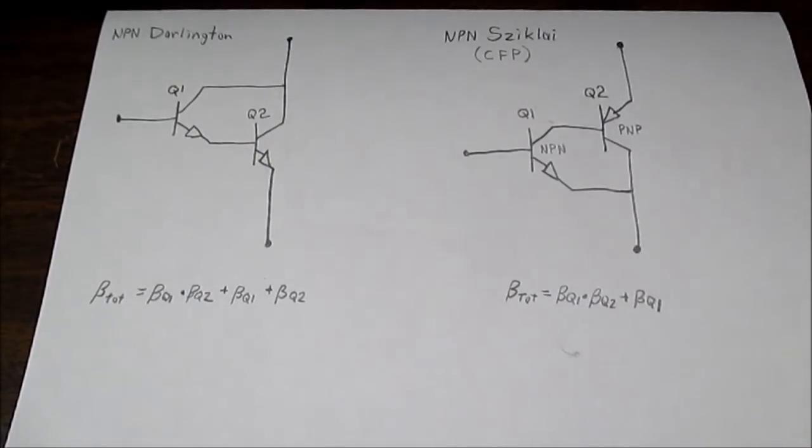So first of all, what is the gain of the circuit? It's going to be extremely high. That's why we have the circuit arranged like this. This transistor is driving this transistor, and the way it works out, the gain multiplies—they don't just add together, they actually multiply.